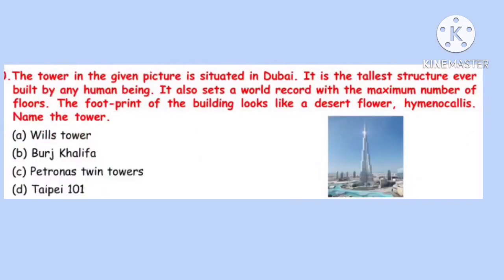Question 20. The tower in the given picture is situated in Dubai. It is the tallest structure ever built by any human being and also sets the world record with the maximum number of floors. The footprint of the building looks like a desert flower. Name the tower. Correct option is B: Burj Khalifa, located in Dubai.